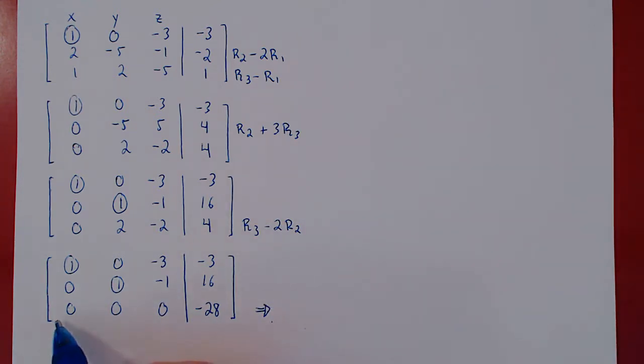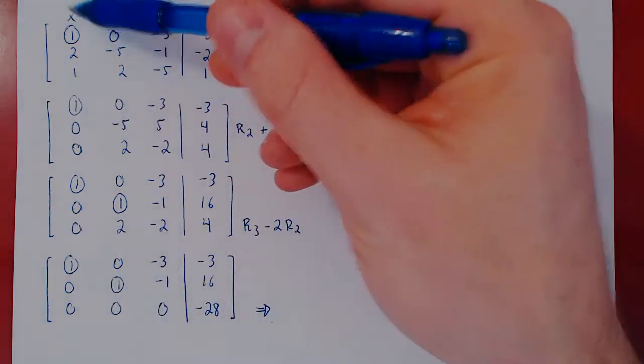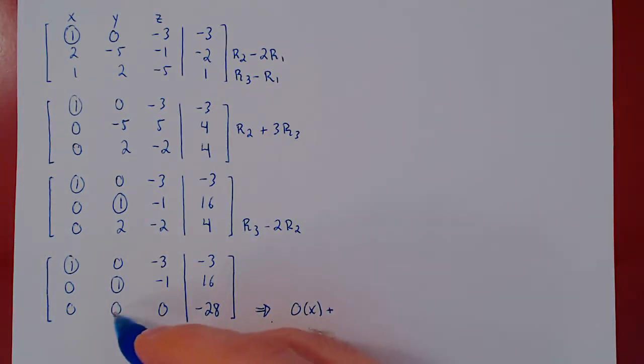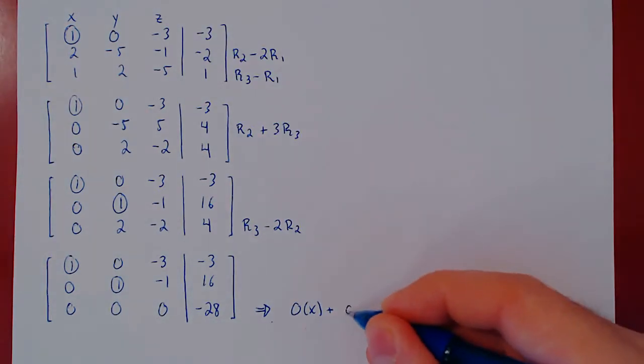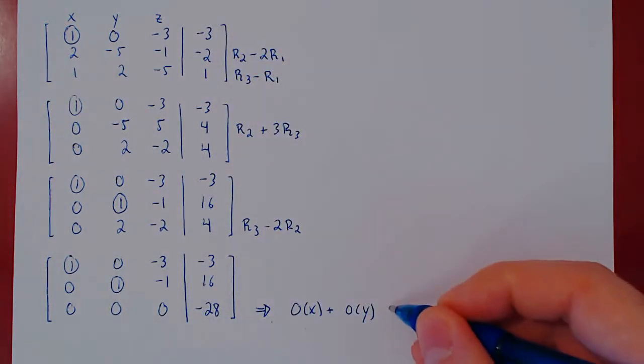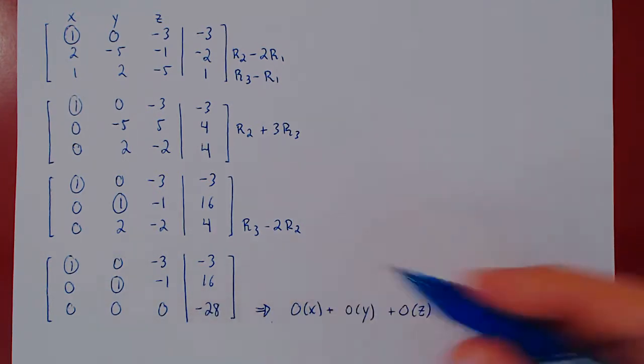Let's see why this is interesting. Let's go from the row of the augmented matrix back to the corresponding equation. So this would be the equation 0 times x plus 0 times y plus 0 times z equals negative 28.